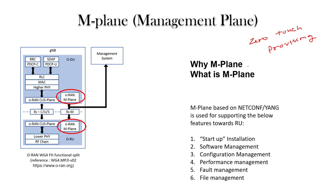You just need to connect the LAN cable and GPS — everything required for running the RAN. After that, there is no need for manual configuration; everything should be taken care of by the management plane. The management plane uses NETCONF and YANG model to achieve this.